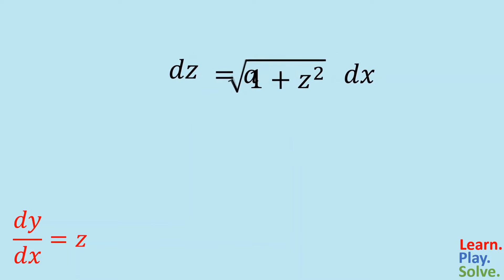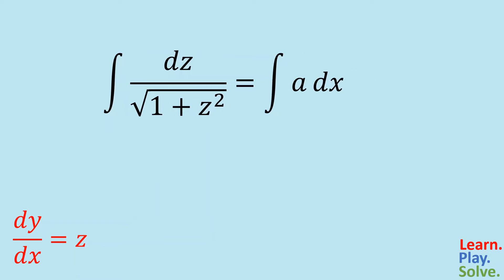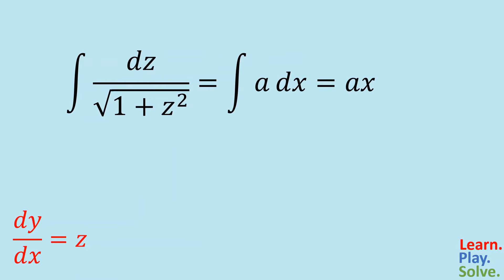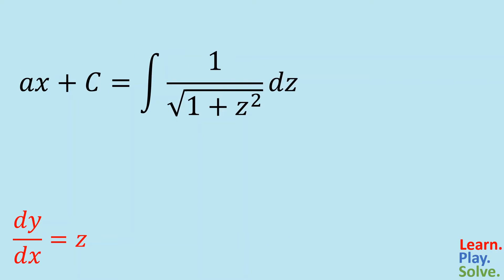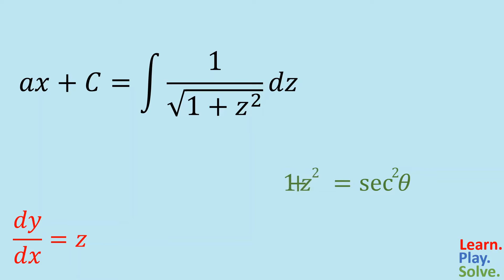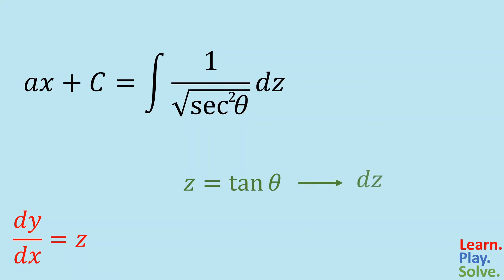We can start by separating the variables and integrating both sides. For the right side, the antiderivative of the constant a is ax, and we shouldn't forget about the arbitrary constant of integration c. Integrating the other side is not as easy — we'll have to use trigonometric substitution. Specifically, we'll use the Pythagorean trig identity: tangent squared plus 1 equals secant squared. If we substitute tangent with z, we get what's under the radical in our denominator, which we can replace with secant squared. Since we substituted tangent with z, dz must be the derivative of tangent, which is secant squared theta d theta.